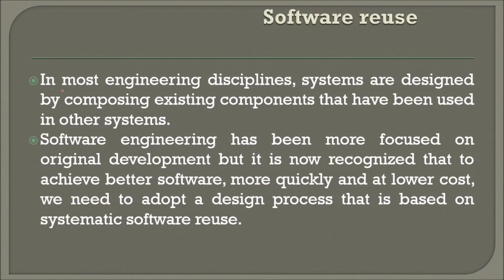In most engineering disciplines, systems are designed by composing existing components that have been used in other systems — so just use them. Why redevelop? Software engineering has been more focused on original development, but it is now recognized that to achieve better software more quickly and at lower cost, we need to adopt a design process based on systematic software reuse.